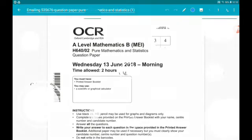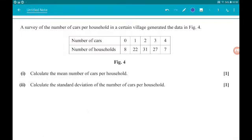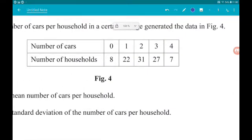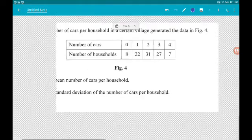Okay, let's go. Question 4. A survey of the number of cars per household in a certain village generated the data in figure 4. So we got the number of cars, 0 to 4, and we got the number of households along the bottom.